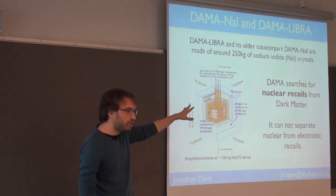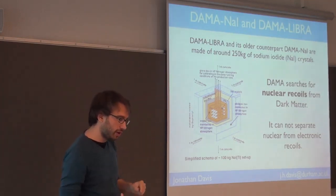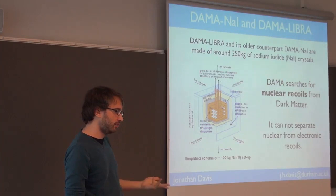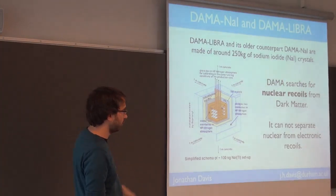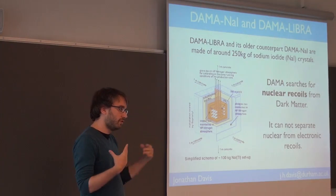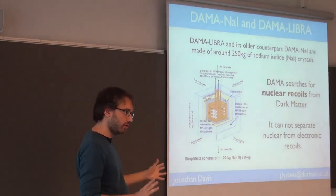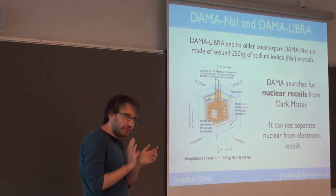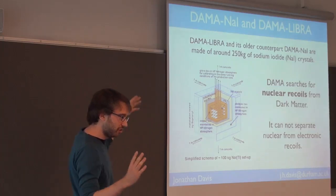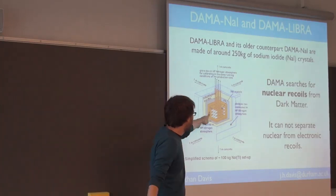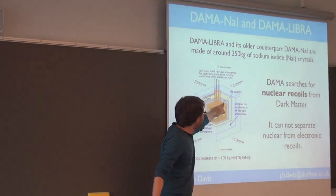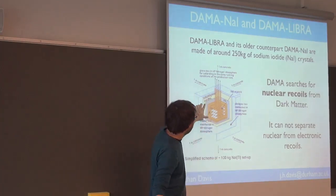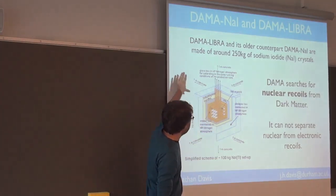DAMA, in all its variants, searches for nuclear recoils — dark matter colliding with nuclei, not electrons. Interestingly, DAMA itself cannot actually separate nuclear and electronic recoils. So although it's looking for nuclear recoils, it also observes things scattering off electrons and can't disentangle the two, unlike some experiments like LUX. The crystals are very sensitive to these small energy deposits, surrounded by shielding and more shielding. The lead shield around it might become interesting later.